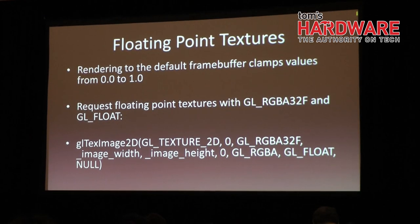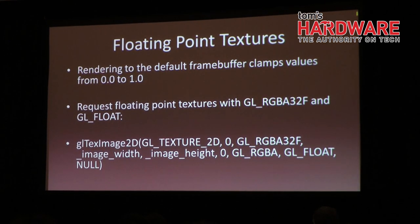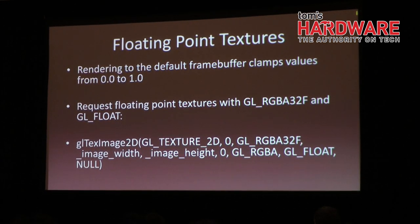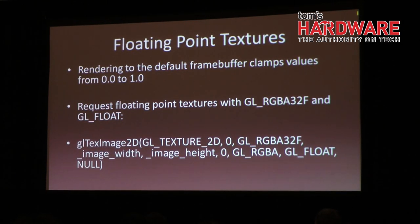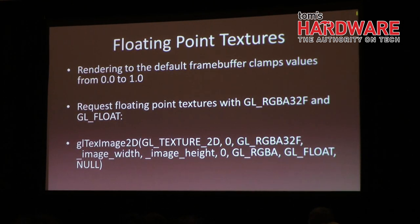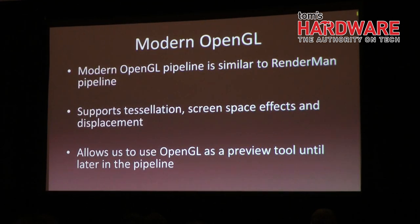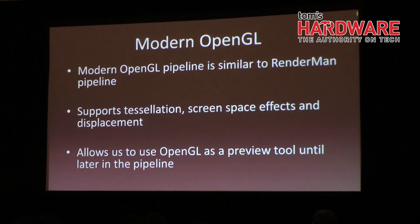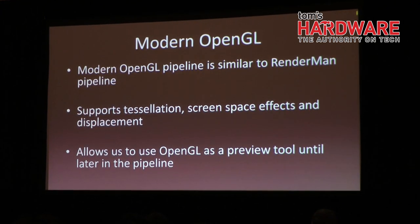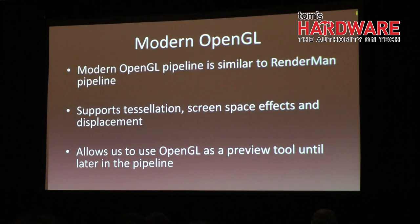One important extension to OpenGL for the purposes of matching CPU to GPU is the floating point texture support, which is now a part of the OpenGL core pipeline. So if you're going to try to match renders on the CPU and the GPU, make sure that you use floating point textures in OpenGL. Recent changes to the OpenGL pipeline have led to more common ground between OpenGL and RenderMan renders. Modern OpenGL supports tessellation, screen space effects, and displacement, which are all features that we need to render our assets.